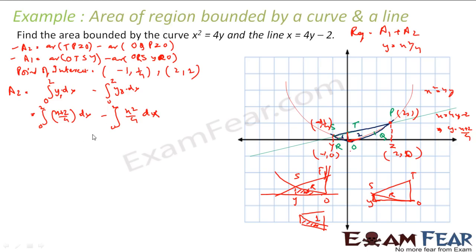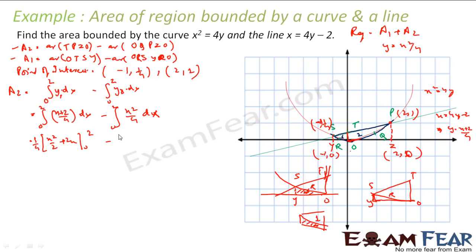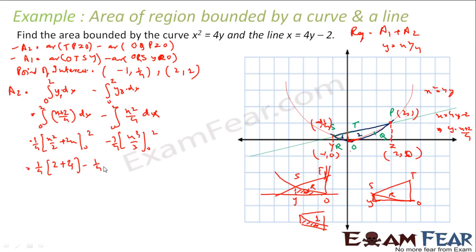Solving: integral from 0 to 2 of (x plus 2)/4 dx minus integral from 0 to 2 of x²/4 dx. This becomes (1/4)[x²/2 + 2x] from 0 to 2, minus (1/4)[x³/3] from 0 to 2. Evaluating gives (1/4)(2 + 4) minus (1/4)(8/3), which equals 6/4 minus 2/3, that is 3/2 minus 2/3, giving A2 equals 5/6.